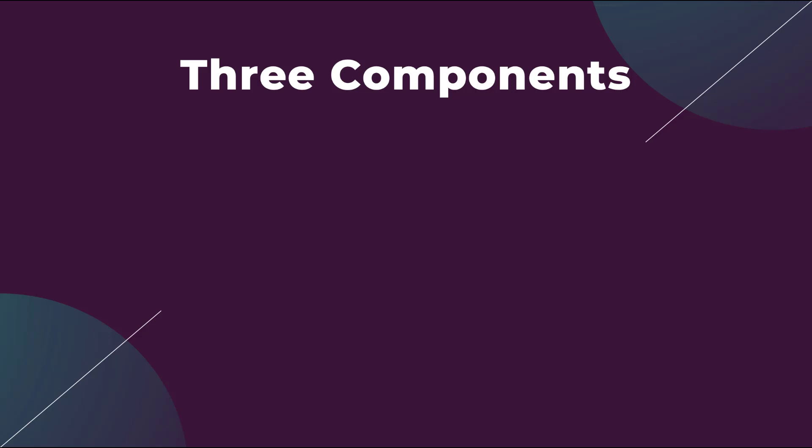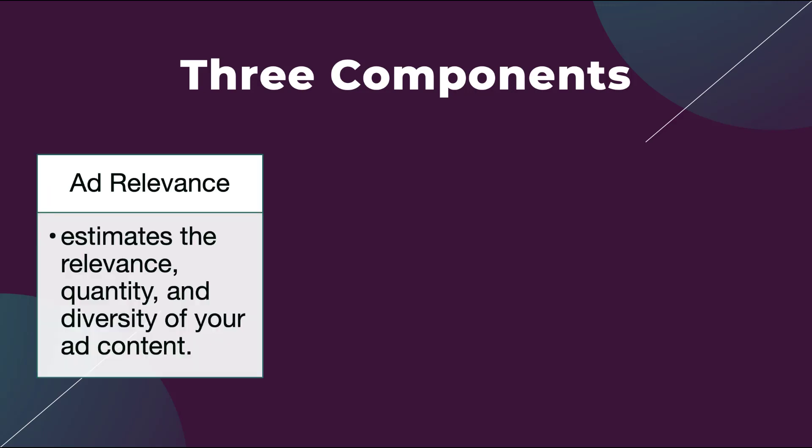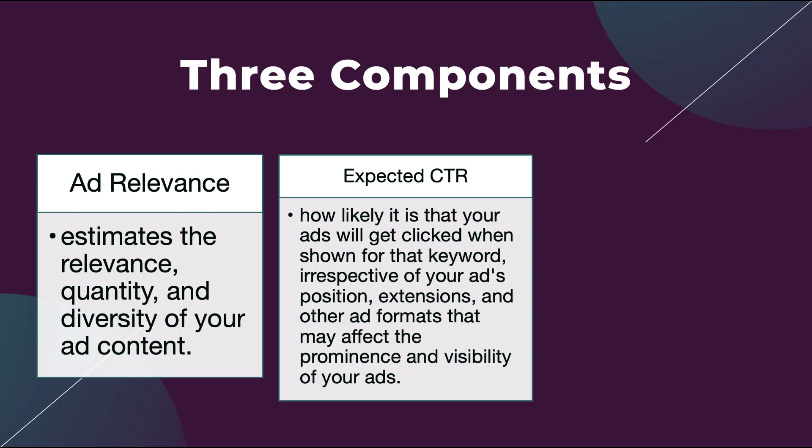The first component is ad relevance, which estimates the relevance, quantity, and diversity of your ad content. Google wants your ads to be relevant to the search queries coming through your keywords, but it also doesn't want you to just keyword-stuff. That's where quantity and diversity of ad content comes in — if you're just trying to insert key phrases, the ad isn't going to provide much value, similar to doing that for SEO.